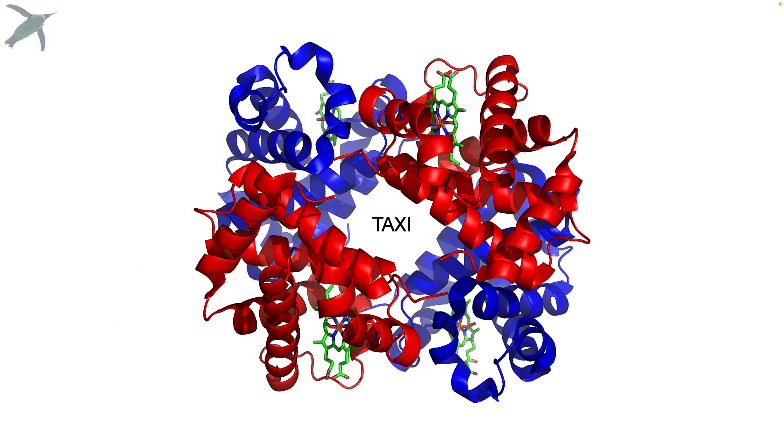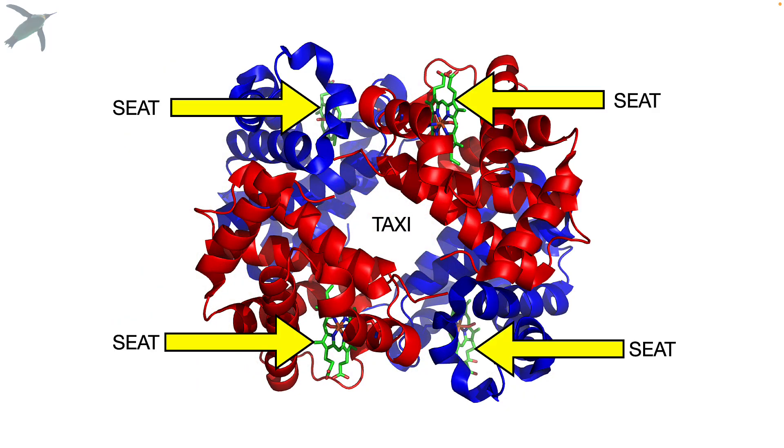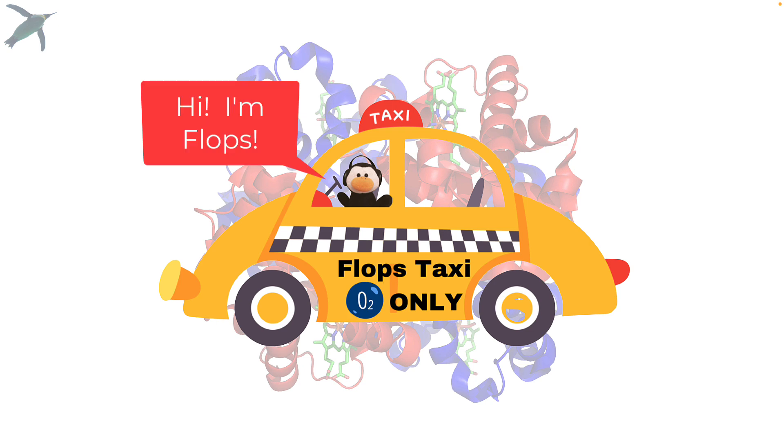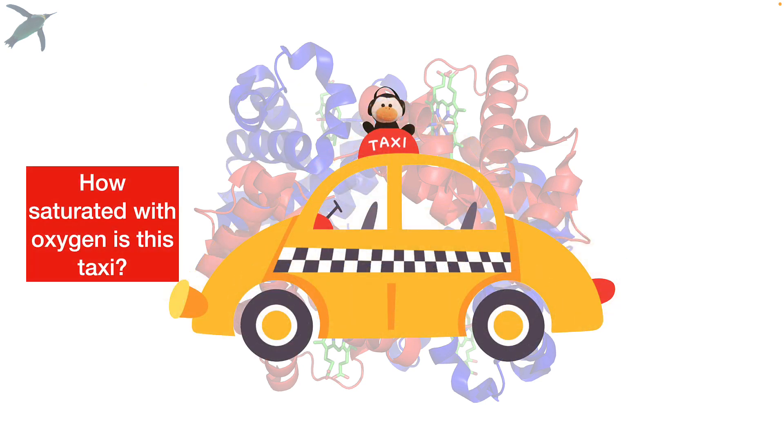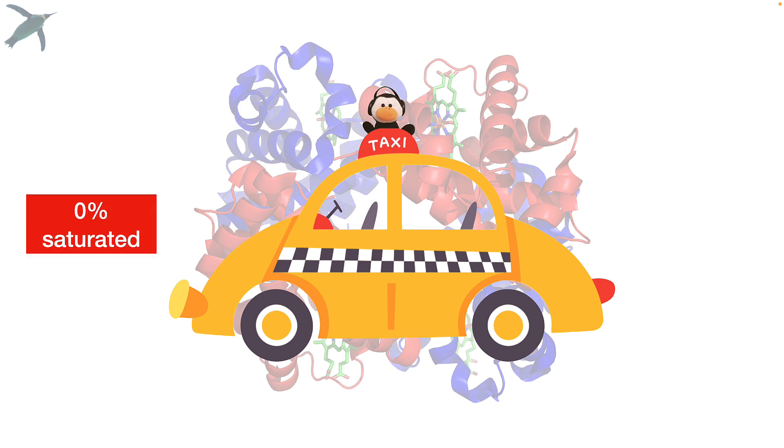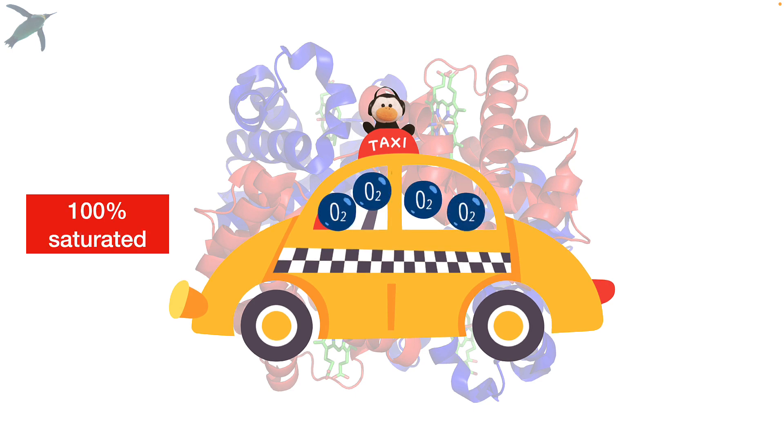Now, my analogy is going to be that hemoglobin is like a taxi with four seats. So this taxi has the ability to bind up to four molecules of oxygen gas. This is just a lot friendlier. So we're going to talk about a taxi cab. The taxi cab has four seats. So when it is empty, how saturated with oxygen would you say this taxi is? Not a difficult question. That's 0% saturated. What about when we load with one molecule of oxygen gas? What percent saturated would you call that? That's 25% saturated. Here is 50%, here is 75%, and here is 100%. We're going to come back to this idea very shortly.